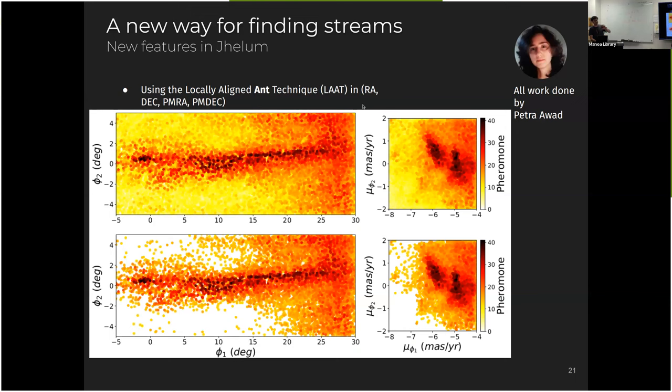You can see the stream similar to what I've shown before with the narrow and the broad component. But now you can see that there's actually two clumps in proper motion, which is the right-hand panels. And then when you just apply a threshold to the pheromone level, it's basically membership probability for the stream.